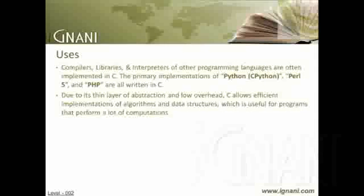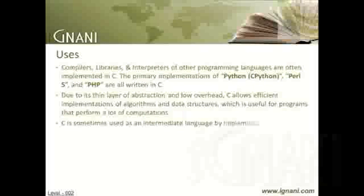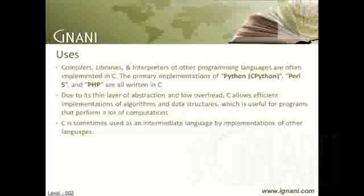For example, the GNU Multi-Precision Library, the GNU Scientific Library, Mathematica, and Matlab are completely or partially written in C. C is sometimes used as an intermediate language by implementations of other languages. This approach may be used for portability or convenience. By using C as an intermediate language, it is not necessary to develop machine-specific code generators.